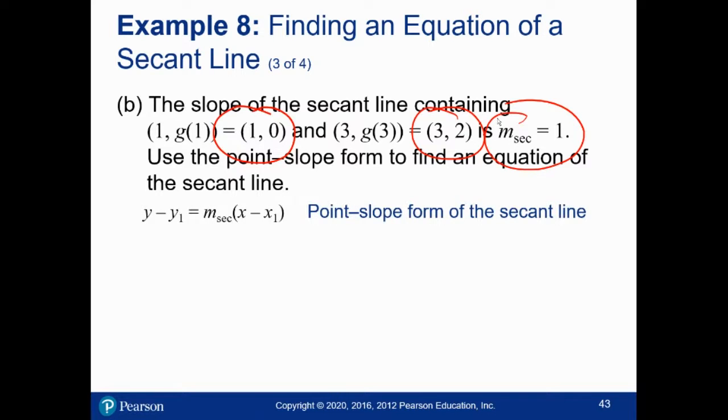All right. So we use point-slope form and we just plug in. Either point works. The book just happened to use this one, I guess, because it's first. It doesn't actually matter. You'll get the same answer no matter what.